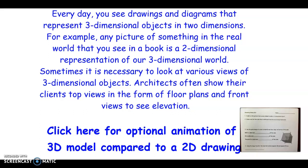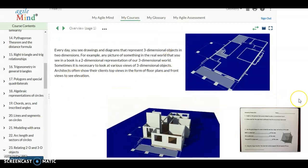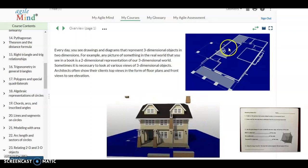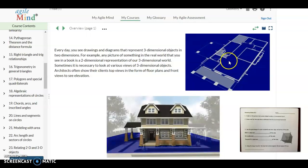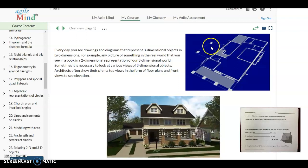Architects, for example, often show their clients different views from a building they might be building. They might give them a top view or a front view, different two-dimensional views, but of course the building itself would be a three-dimensional object. So you can see here in this animation that it's a three-dimensional building, but in this top right diagram that is a two-dimensional view of one view of that building itself.